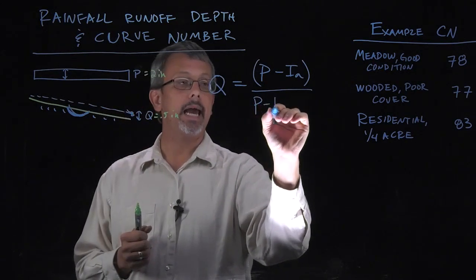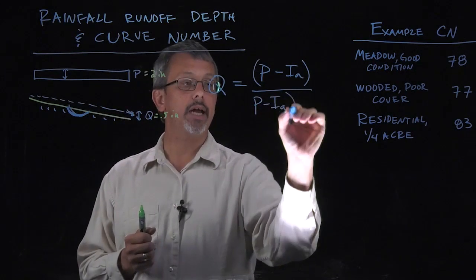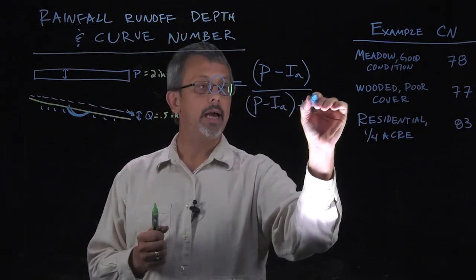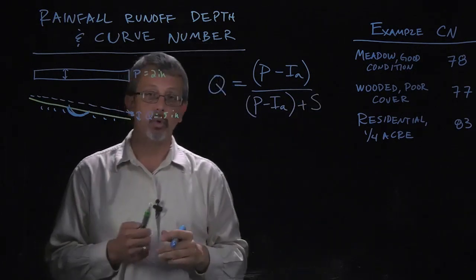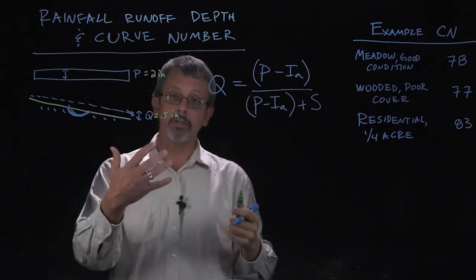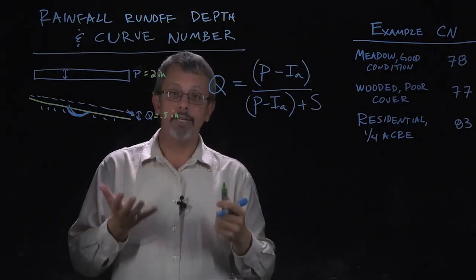One of them is this Ia value, which stands for an initial abstraction, and then the S value is a value we call storage. These are also going to be assumed to be in inches of depth.